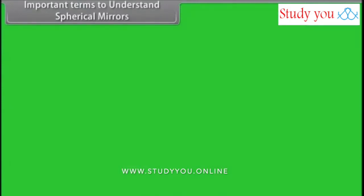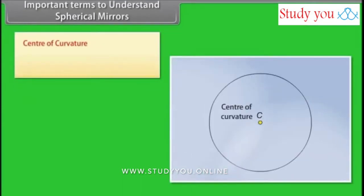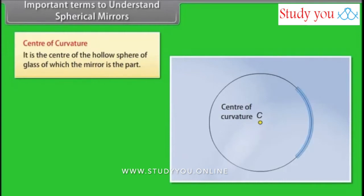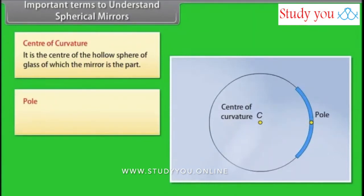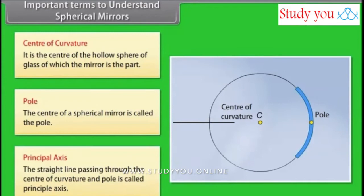Important terms to understand spherical mirrors: The center of the mirror is called the pole. The straight line passing through the center of curvature and the pole is called the principal axis.